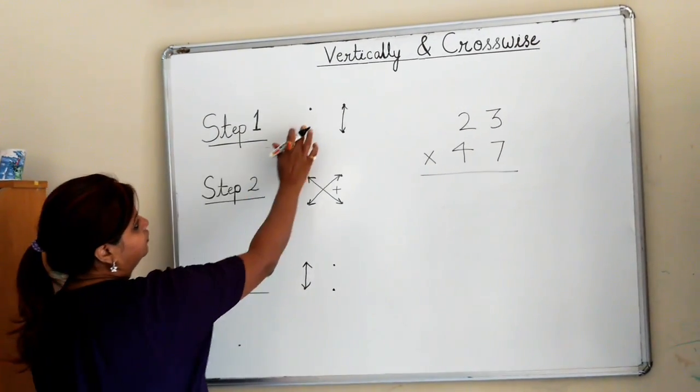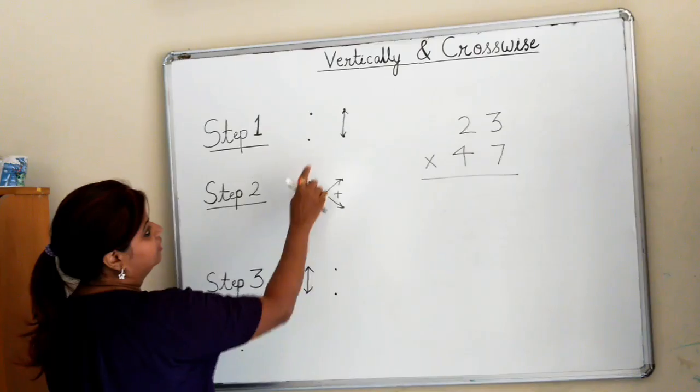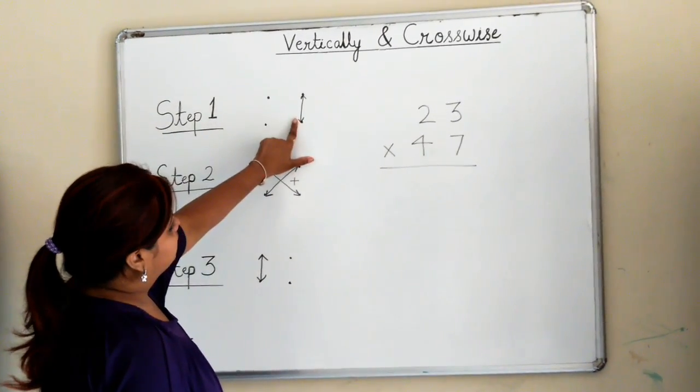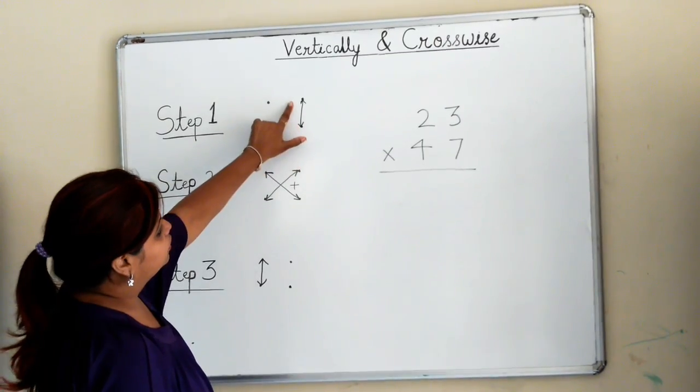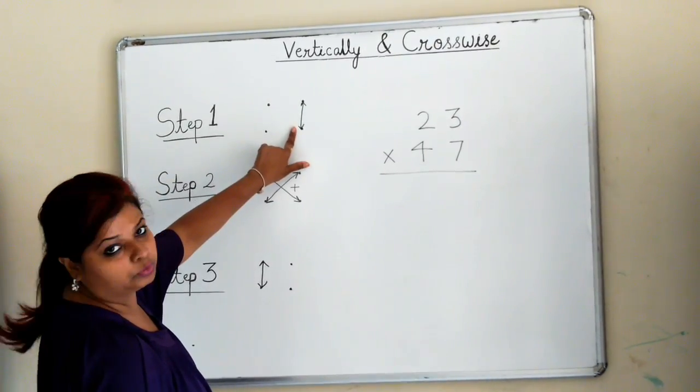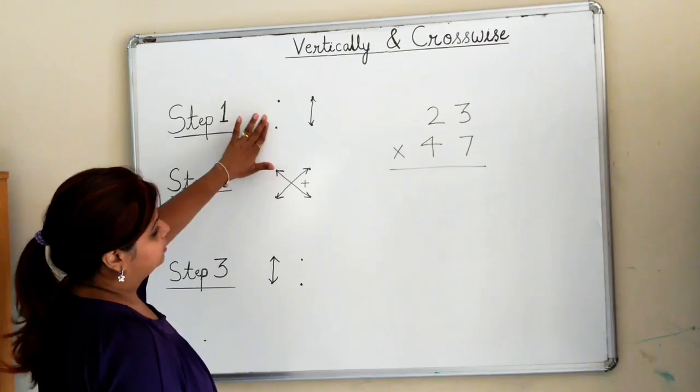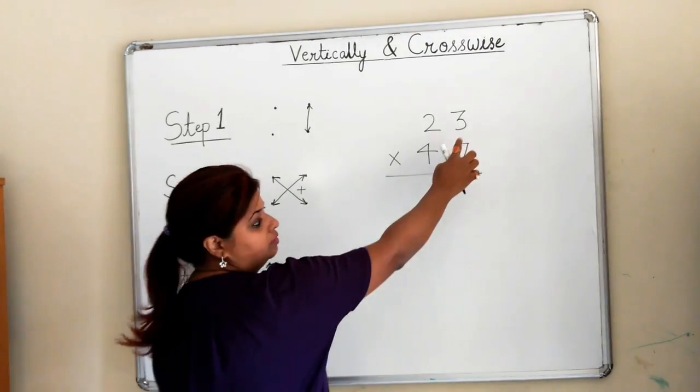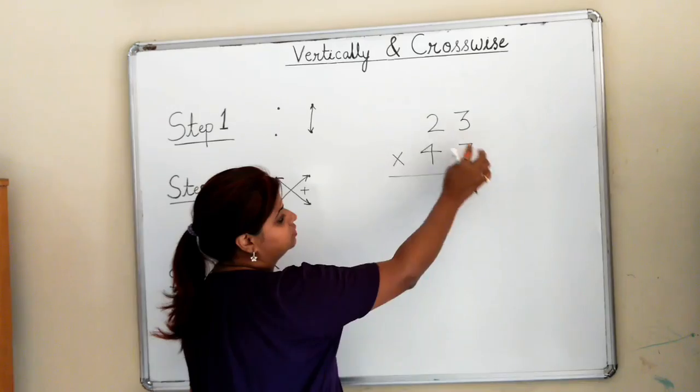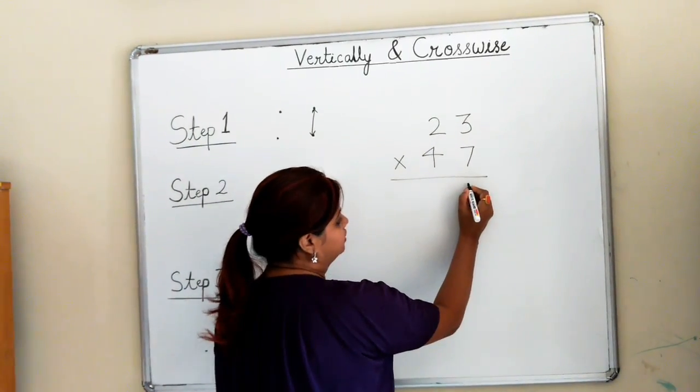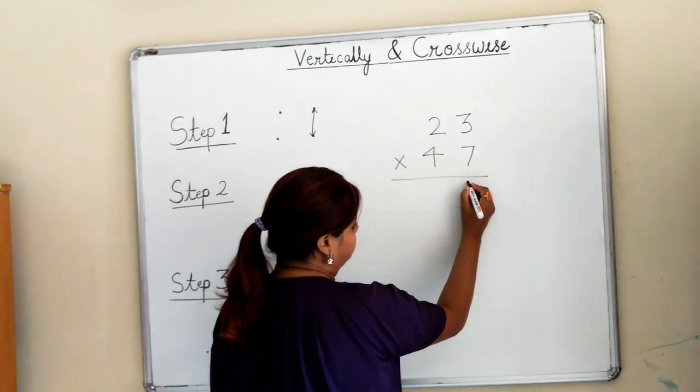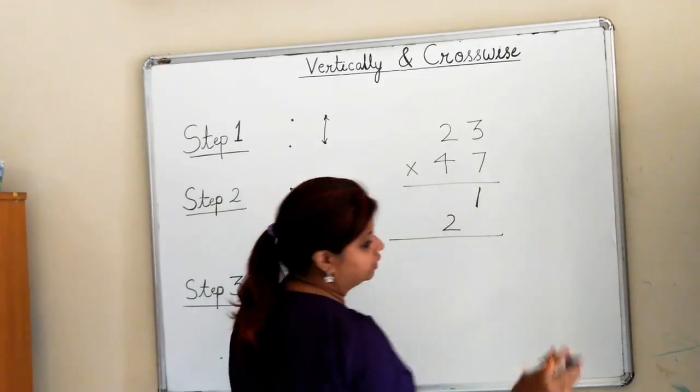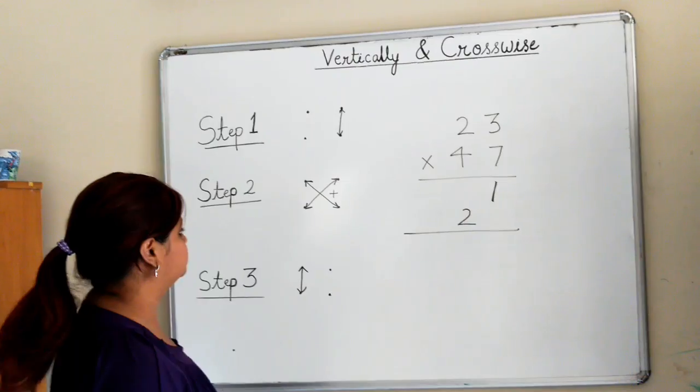Step 1: In the diagram, I have 4 dots. The first two dots are interconnected—these are the unit places in the two-digit numbers, and this is the tens place. So step 1: 7 multiplied by 3. 7×3 is 21. You keep 1 here and carry 2 over, the same way you do in conventional multiplication.